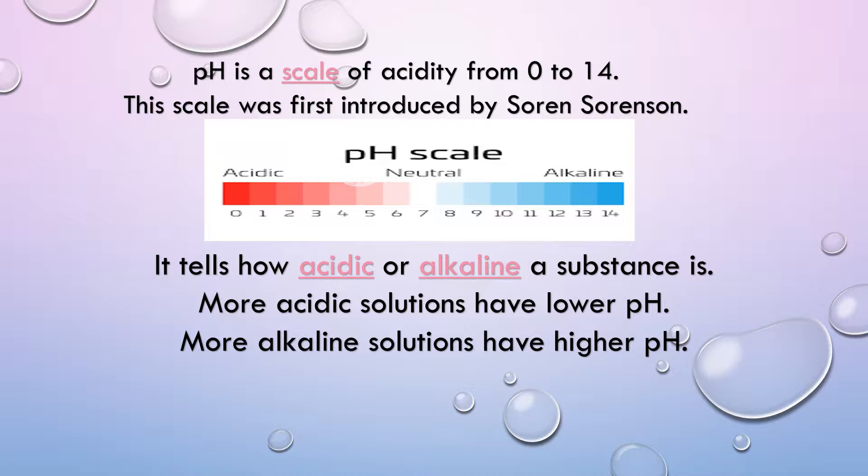pH scale is inversely related to hydrogen ion concentration. At pH 0, the hydrogen ion concentration in a solution will be greater.